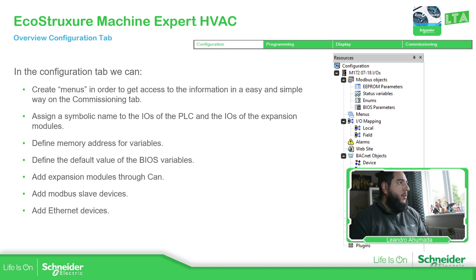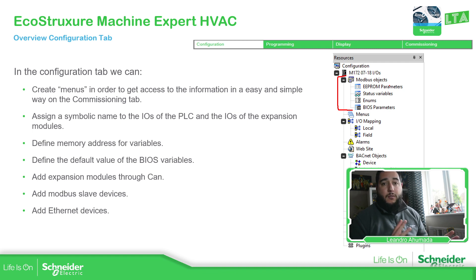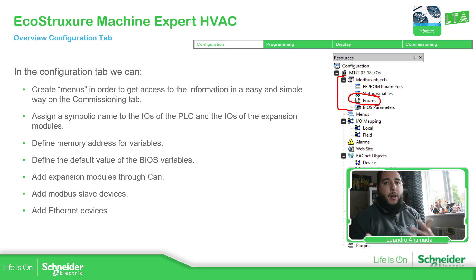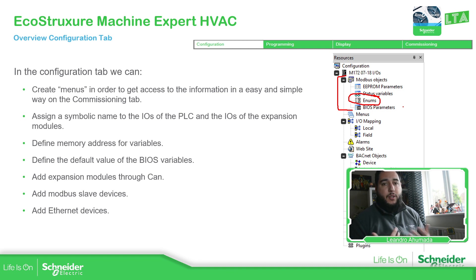If we take a look at the M172, we have Modbus objects related to EEPROM, status, and BIOS parameters. EEPROM is basically where you define all the configuration variables for the system. The status variables have some kind of indication about the process. ENOMS is a fancy way to see the variables — we'll probably cover that later. And the BIOS parameters are the internal system variables on the PLC that let you pre-configure the system.